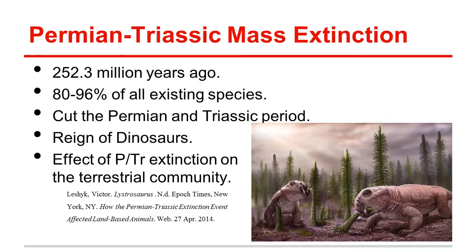This event occurred about 252.3 million years ago, killing off nearly 80 to 96 percent of all species. As a result, it separated the Permian era from the Triassic period. The Triassic period, and in essence the extinction itself, started the reign of the dinosaurs and greatly diversified the terrestrial community.